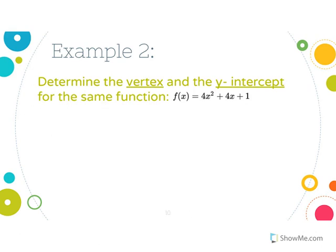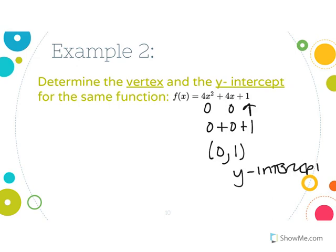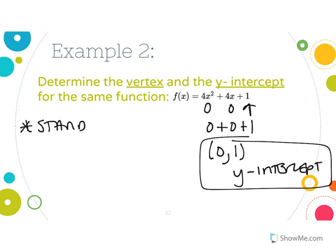For the y-intercept of that same equation, plug in 0 for x. Anything times 0 is 0, so you get 0 plus 0 plus 1, meaning y equals 1. The y-intercept is (0, 1). A key tip: when you're in standard form, you can always identify the y-intercept just by looking at the constant term c — no calculation needed.